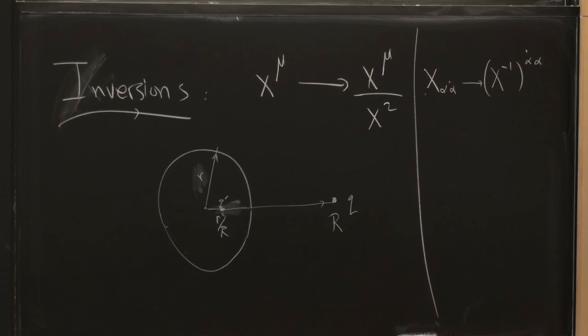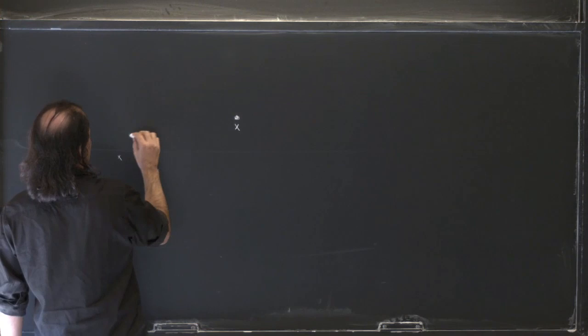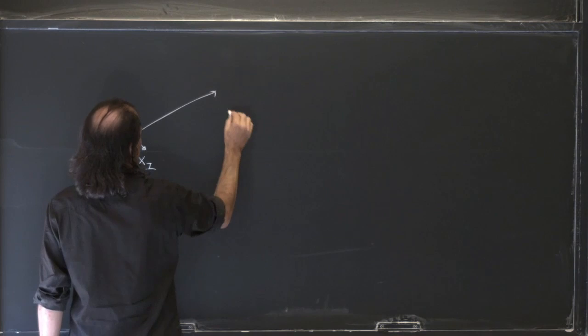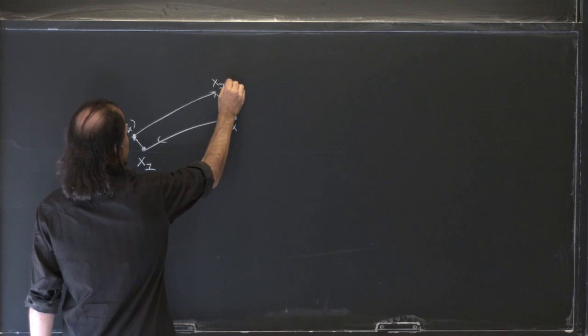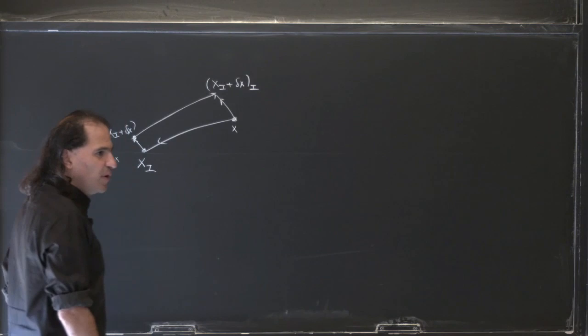But what we can do is take some origin, take some point x, first invert it to some point x-inverted, do a little translation, and then invert it back. So this is x-inverted plus delta-x, and then invert it back. That's going to give us a nearby point — x-inverted plus delta-x, inverted. And that action, this little infinitesimal action, is the special conformal transformation.